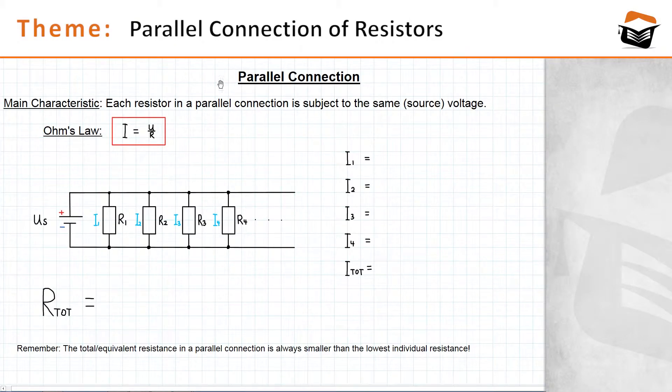A parallel connection exists if all resistors in the circuit are connected to the wires or to the rails that directly lead to the positive and to the negative pole of the source voltage.